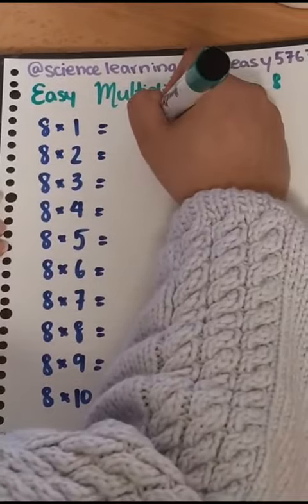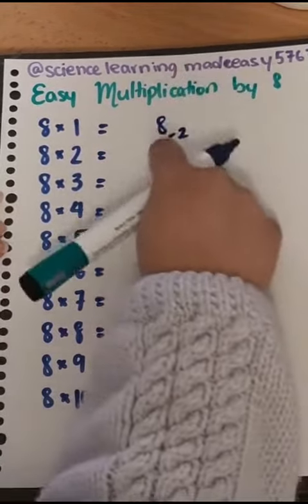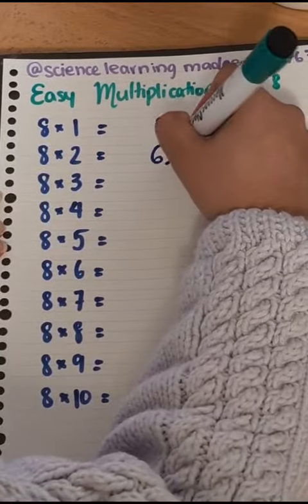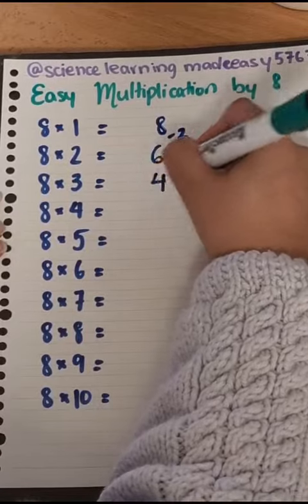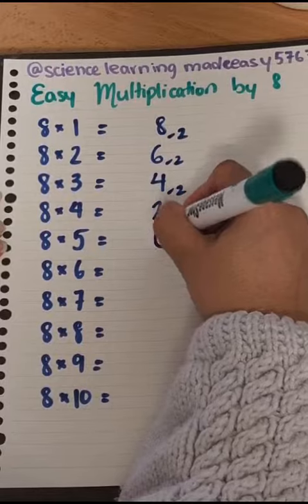8 times 1 is 8. Then the trick is you're going to subtract 2 to get to your next number. So 8 minus 2 is 6. Minus 2 is 4. Minus 2 is 2. Minus 2 is 0.